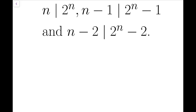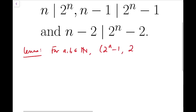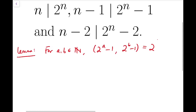To solve this problem, I need one very important result — I'll call this a lemma — which I'll keep using again and again. For natural numbers a and b, the greatest common divisor, GCD, of 2 to the a minus 1 and 2 to the b minus 1 equals 2 to the power GCD of a and b, minus 1.